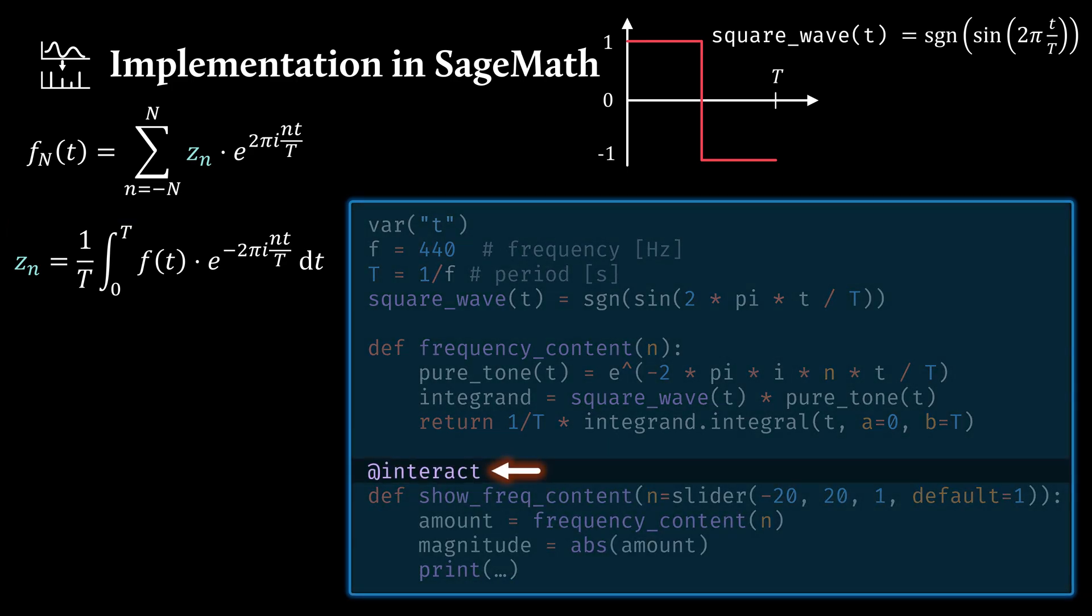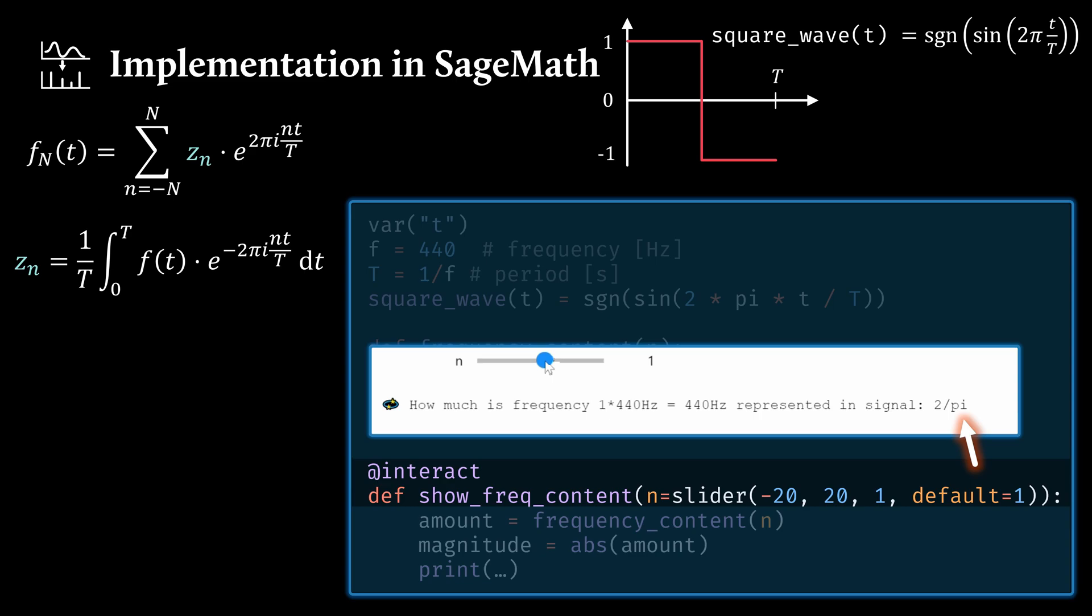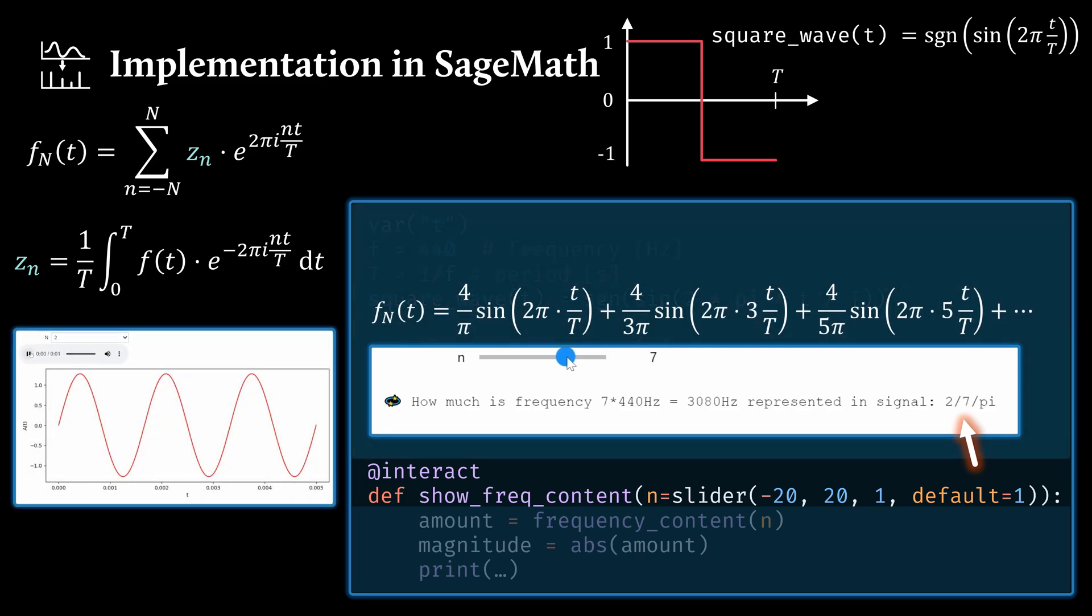Let's interact with this by means of a slider. And what we get is this here. So you see, the integral is evaluated, and we get these coefficients, and you might remember them from earlier on because we've already seen them in the introduction here. This is how we arrived at this weird sum to approximate a square wave.